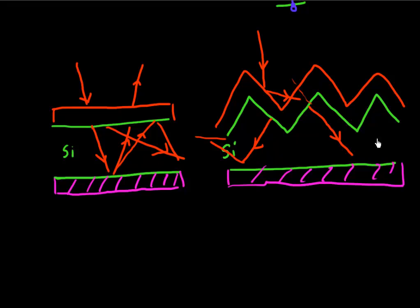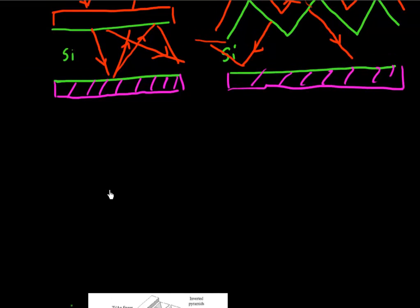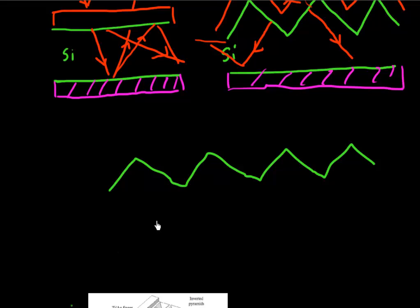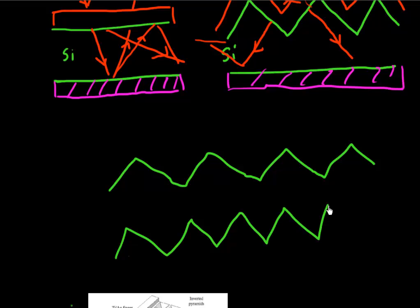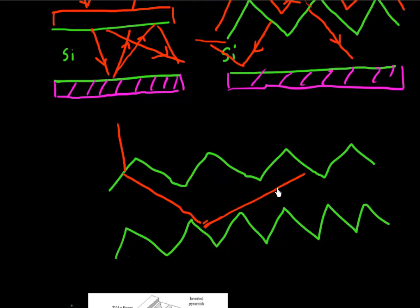We can actually not even restrict ourselves to just the top surface. What we can do is have these textured pyramidal surfaces both at the top and another texture at the bottom. Both of these essentially try to bounce the incoming light at a higher angle, and further, this would again try to bounce it at an even higher angle. We would like to maximize the distance this red light travels within this piece of silicon.